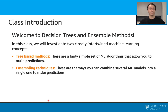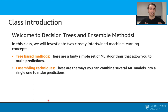In this class, we'll mostly focus on these two types of important machine learning concepts: tree-based methods and ensemble techniques. Tree-based methods are some simple machine learning algorithms that make some type of predictions, such as classifications or regressions. Ensemble techniques are some techniques that can combine several machine learning models into a single one to make the same type of predictions.